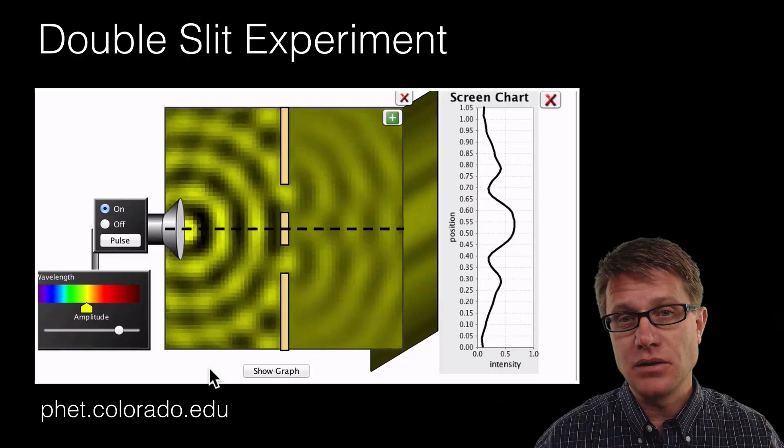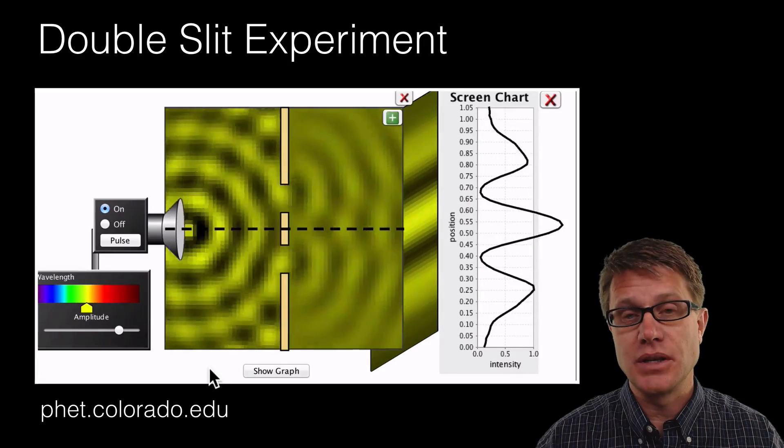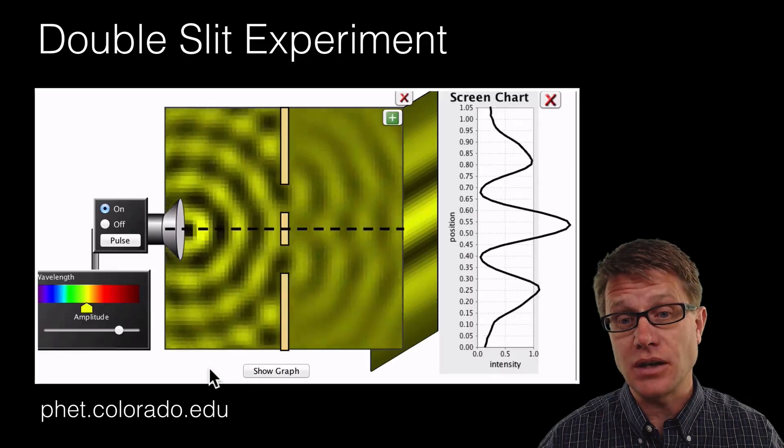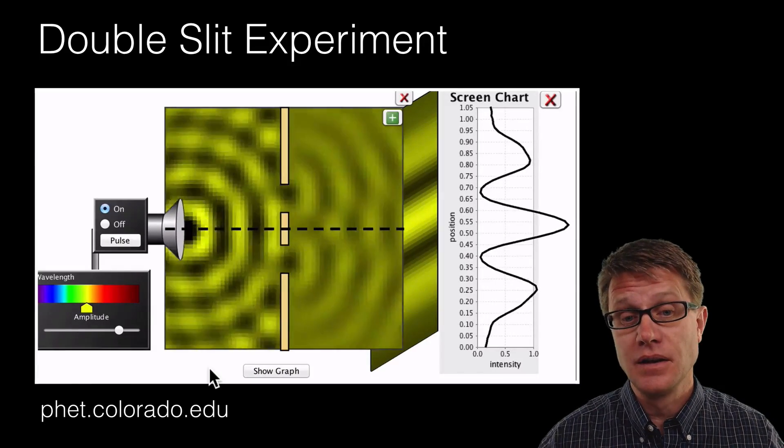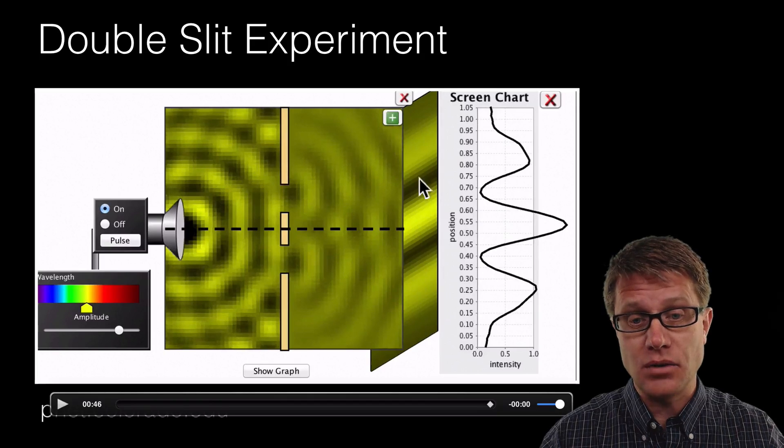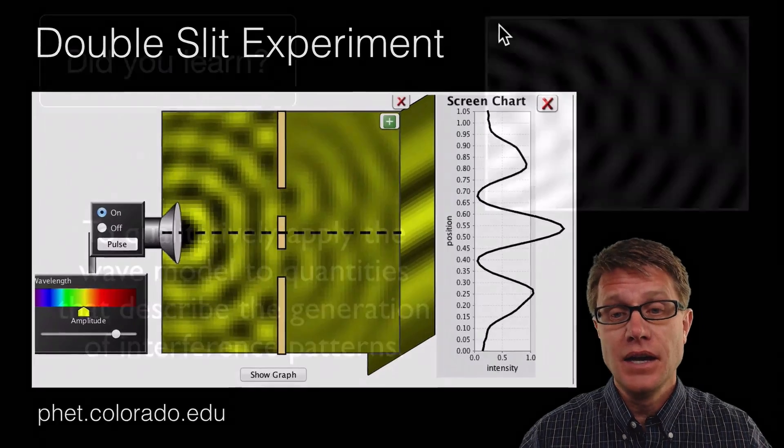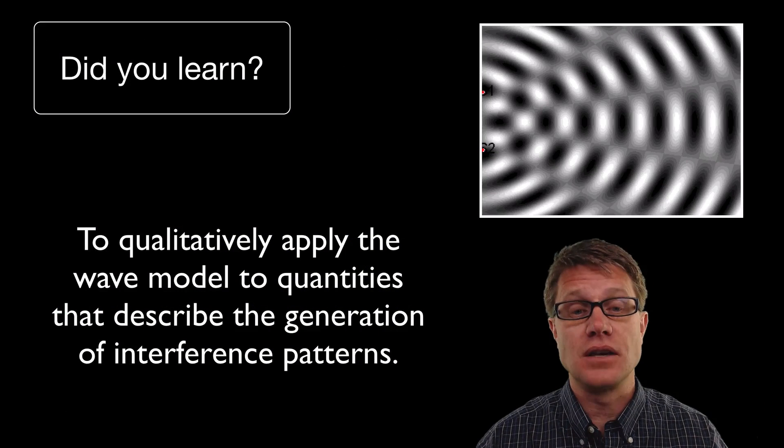But watch what happens when we add two slits now. As we add two slits that is not just one mountain. What we get are these areas where you have constructive interference. So we have a huge amount of light. But then, I mean this is interesting, right here this is directly across from that one slit. It is completely devoid of light. And so that shows us these interference patterns.